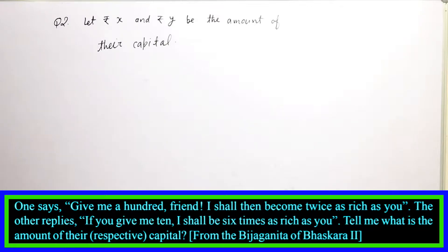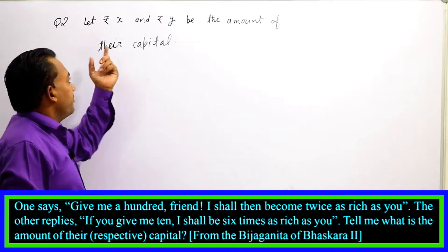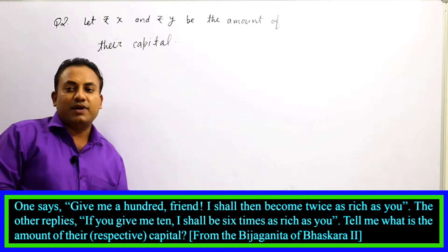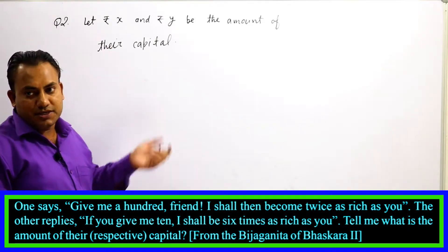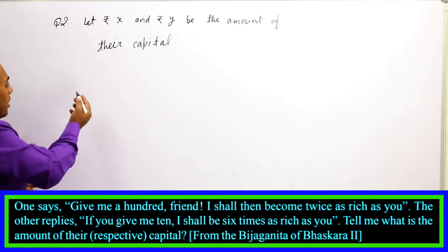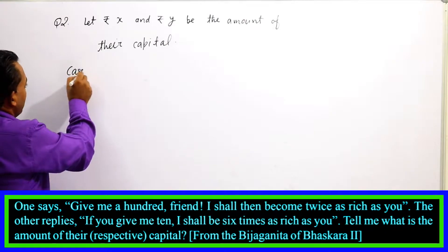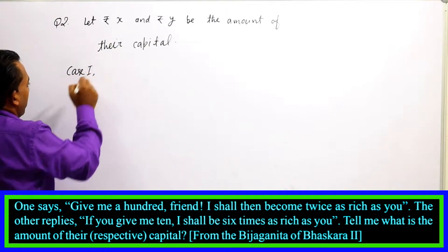We let the first person's capital be x rupees and the other's be y rupees. Now the two conditions are to be satisfied. So first of all, we must set up equations that the capitals have to satisfy.